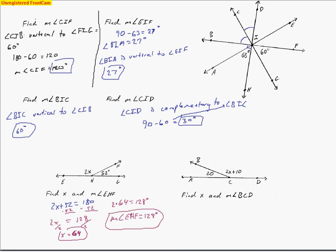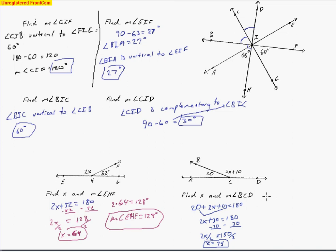The last problem asks me to find X again. The two angles add to make 180 degrees, so I add them and set equal to 180. Combining like terms gives 30 degrees on one side; doing opposite operations leaves 150 equals 2X, so X equals 75. Substituting back, since 20 plus the angle equals 180, I subtract 20 and get 160. The measure of angle BCD equals 160 degrees.